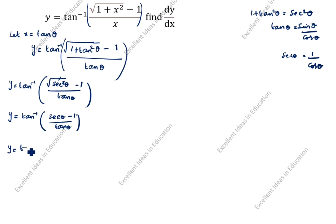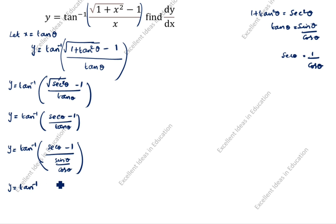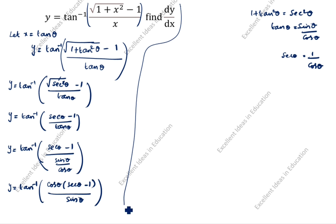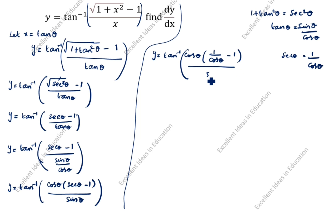So y is equal to tan inverse of secant theta minus 1, divided by sin theta over cos theta. Cos goes up — multiplying through, we get cos theta times (secant theta minus 1) divided by sin theta, which simplifies to (1 divided by cos theta minus 1) times cos theta, divided by sin theta.